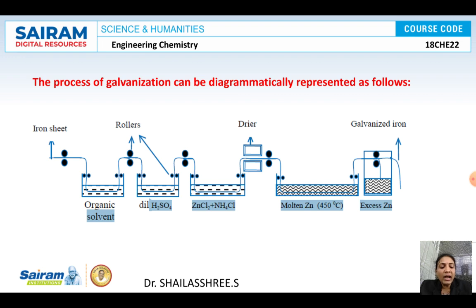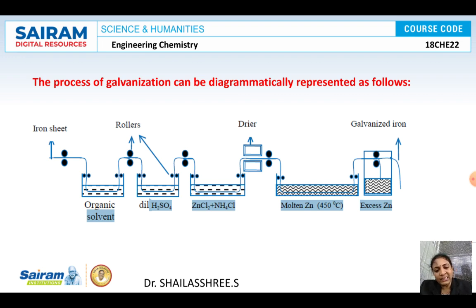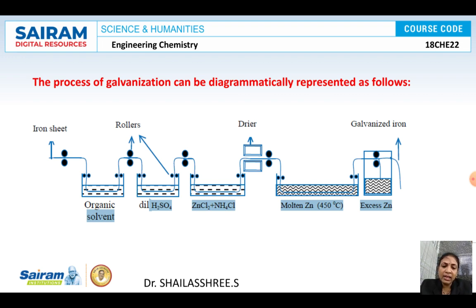Next, it is cleaned with a dilute acid like dilute H₂SO₄ or HCl. If any hardly adhered impurities — such as rust — are present on the surface of the metal, they are removed using these dilute acids. Then the metal is treated with a mixture of zinc chloride and ammonium chloride, which gives a smoother surface. After that, it is rinsed with lukewarm water and dried before being taken to the coating process.